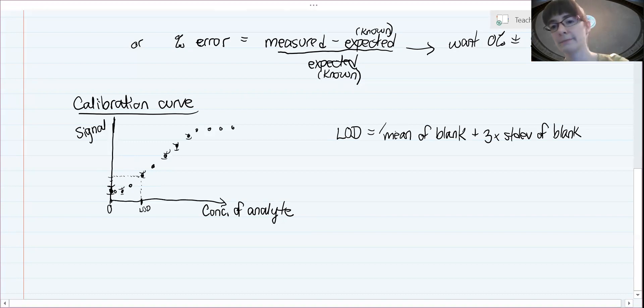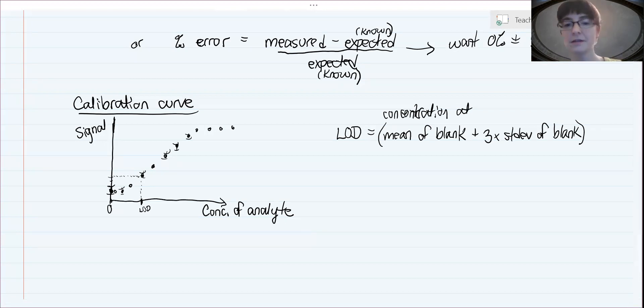It's the concentration corresponding to this signal. So that's your limit of detection. You notice how high it is on this example that I've drawn because it had pretty big error bars on our zero. You would hope to have smaller error bars on your blank measurement so that your limit of detection is much lower than what I've drawn here relative to your calibration curve. So that's one quantitative figure of merit we can get.